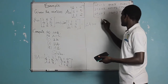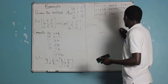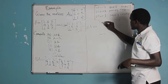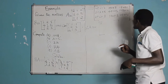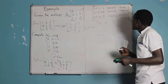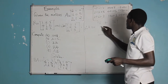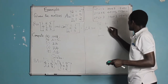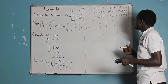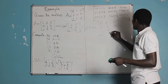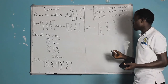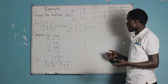Continuing with B times A: second row: 4×2+1×3+5×1=8+3+5=16; 4×1+1×0+5×1=4+0+5=9 (wait, 4+0+1=5); 4×0+1×5+5×2=0+5+10=15. Third row: 1×2+2×3+3×1=2+6+3=11; 1×1+2×0+3×1=1+0+3=4; 1×0+2×5+3×2=0+10+6=16. So the matrix B times A is obtained with those entries.